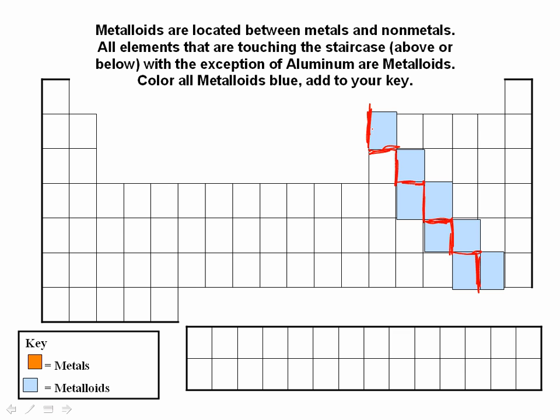Those elements on that stair-step line, you can see those are where your metalloids are found. Things like we have boron up here, and we have silicon here, silicon chips. We were just talking about the semi-conductors. So you can look at your periodic table and look at this a little bit more. But those are your metalloids. Form the boundary between the metals and the non-metals.